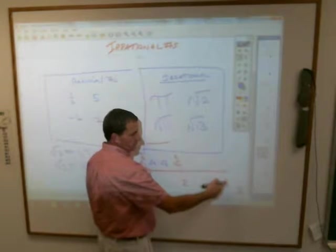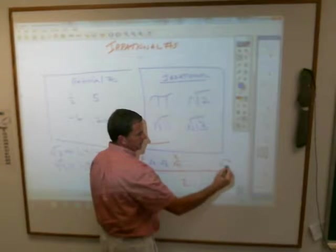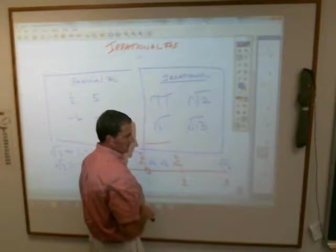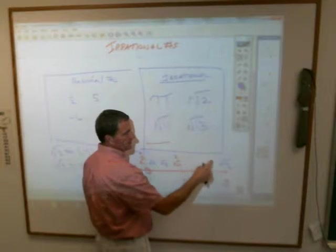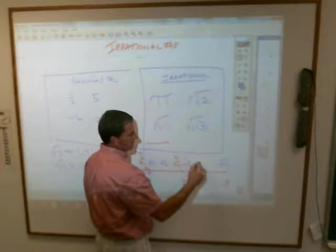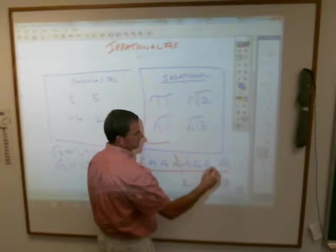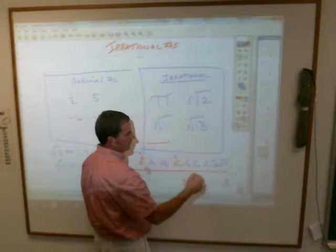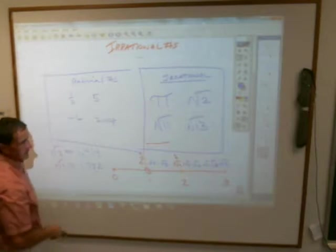Same thing here. 3 is the same thing as the square root of 9, right? So you've got 5, 6, 7, and 8 that all fall in here. You've got the square root of 5, the square root of 6, the square root of 7, and the square root of 8 that all fall in between the square root of 4 and the square root of 9.